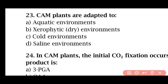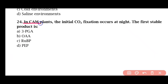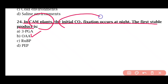Question 23: CAM plants are adapted to — aquatic environment, xerophytic environment, cold environment, or saline environment. The correct answer is option B. CAM plants are adapted to xerophytic environments. Question 24: In CAM plants, the initial CO2 fixation occurs at night and the first stable product is — 3-PGA, OAA, RUBP, or PEP. The correct answer is option B. Oxaloacetate acid (OAA) is the first stable product in CAM plants after initial carbon dioxide fixation.